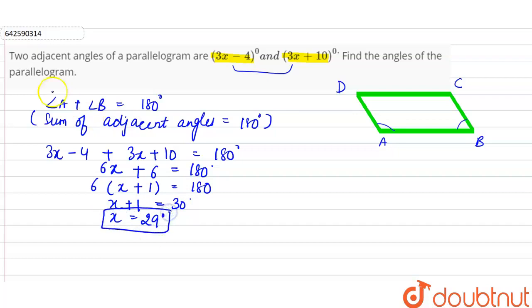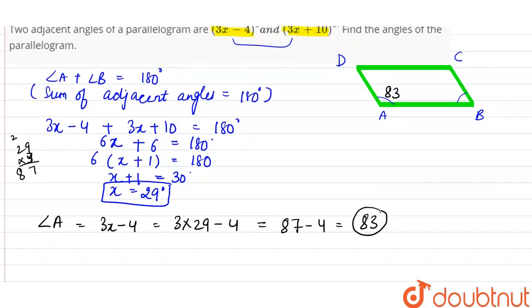So we can say angle A, which is 3x - 4, is equal to 3 into 29 minus 4. 29 into 3 will be equal to 3 into 9 is 27, 3 into 2 is 6, so 87. This is equal to 87 minus 4, which is 83. So angle A is equal to 83.